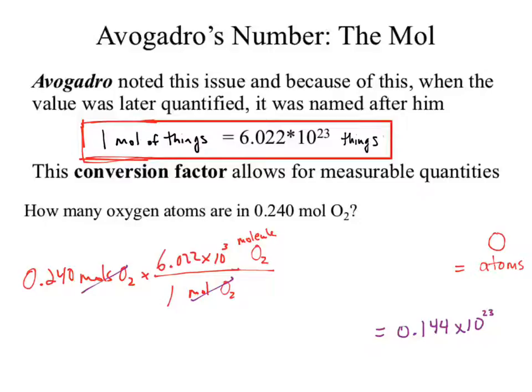This shouldn't be oxygen atoms — that should be oxygen molecules. What did the question ask for? Oxygen atoms. And it's not just the word that's the problem: that says O2 and that says O. We need to convert. There's another conversion that must happen — we need atoms of O as our unit, and we need to cancel out molecules of O2.